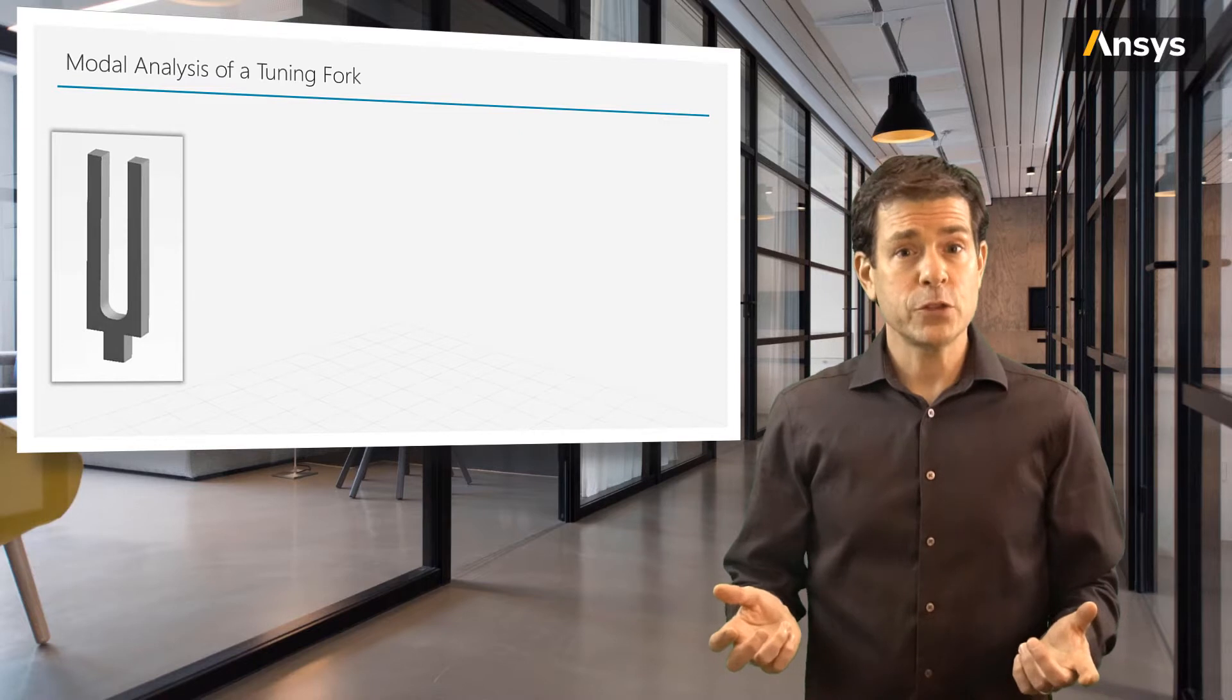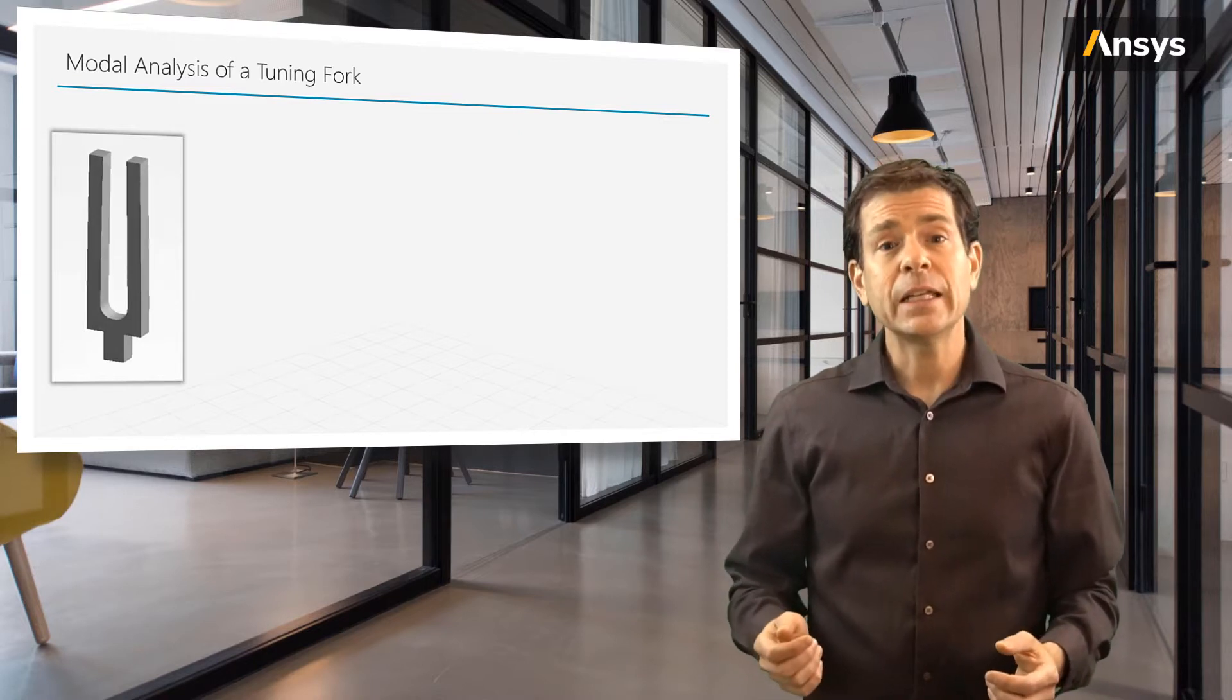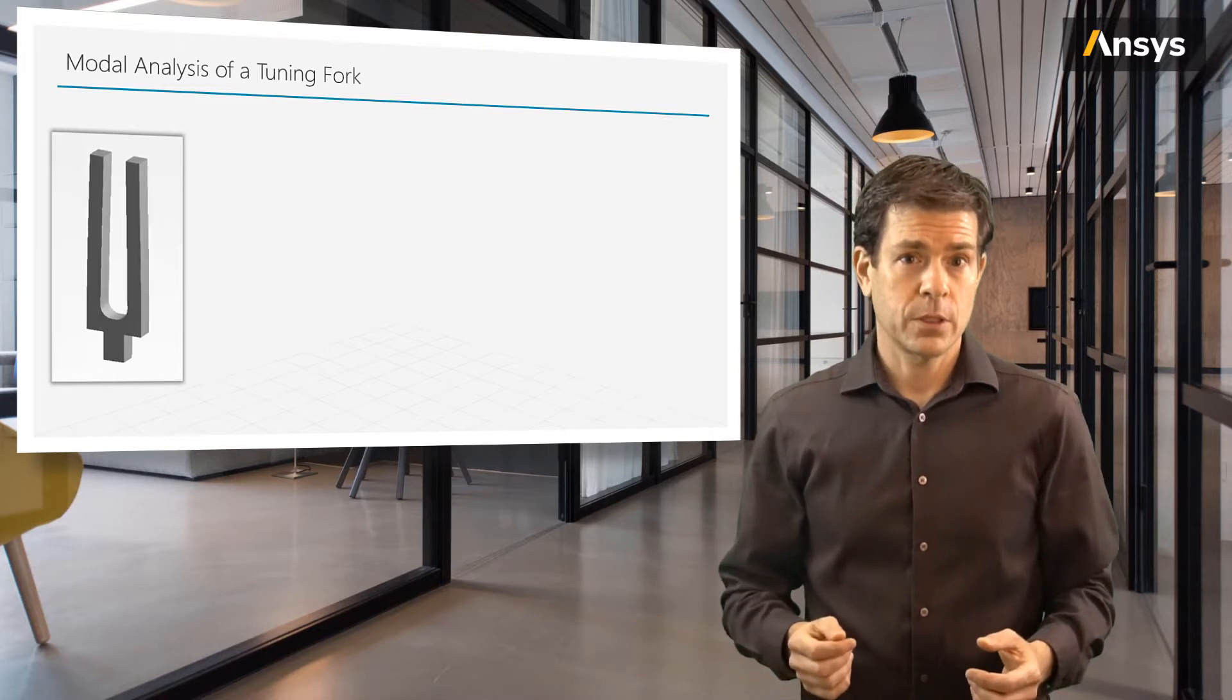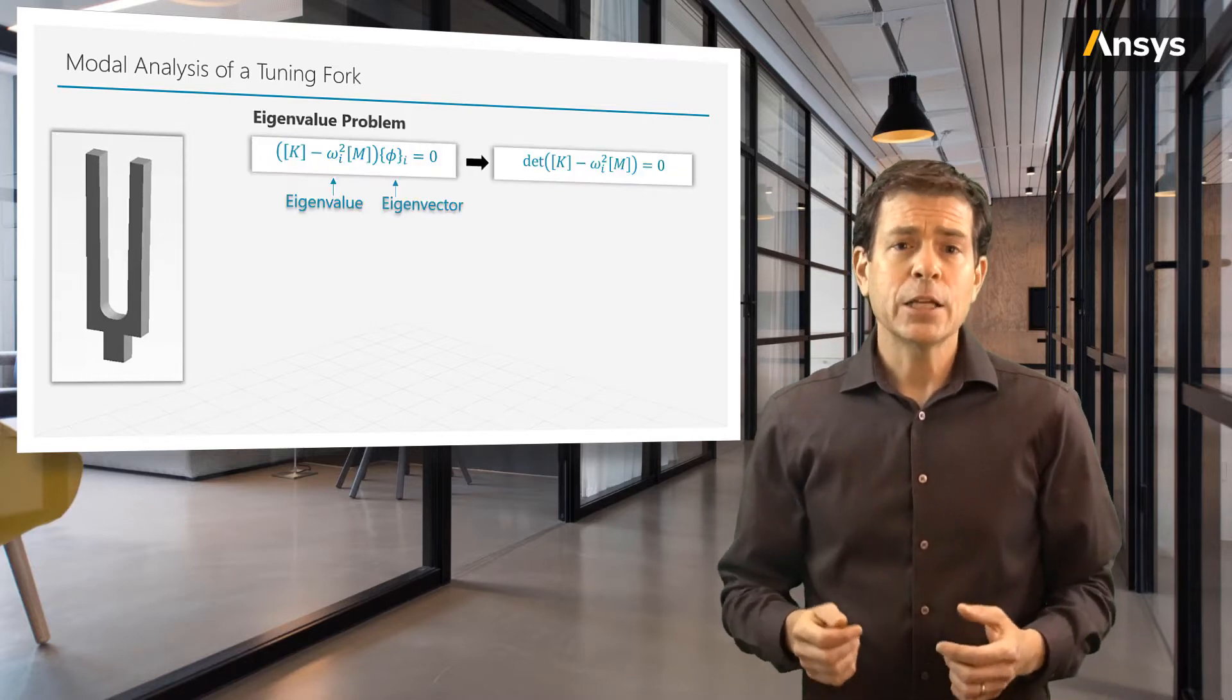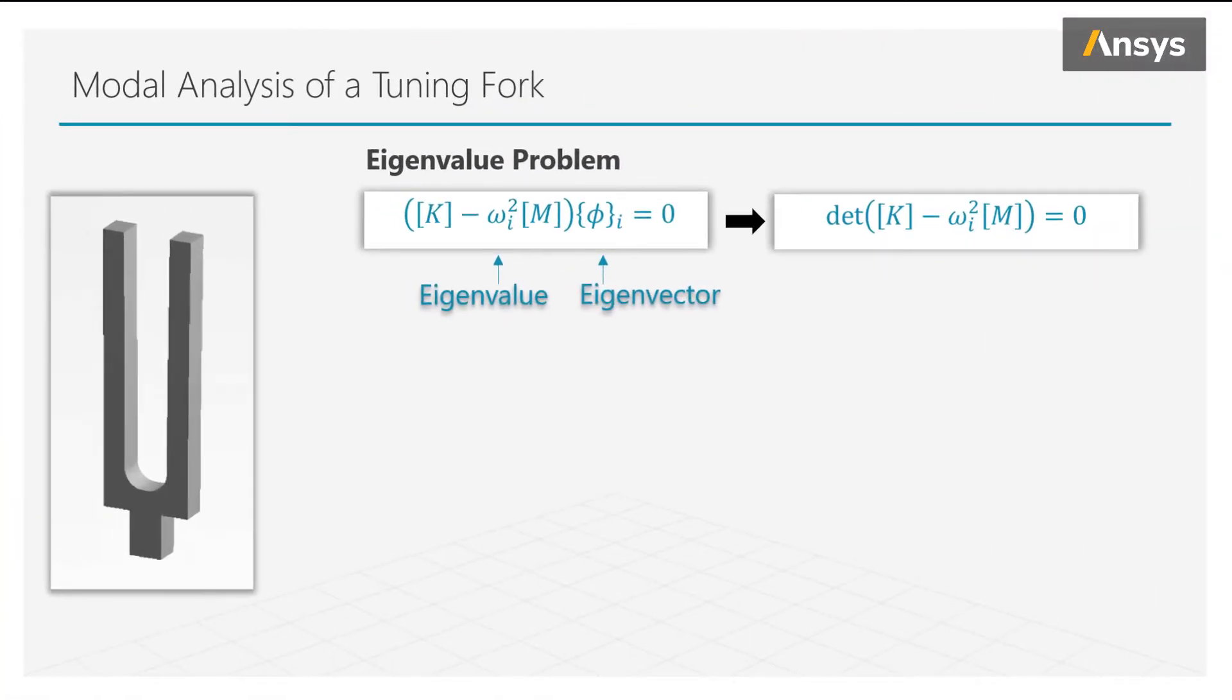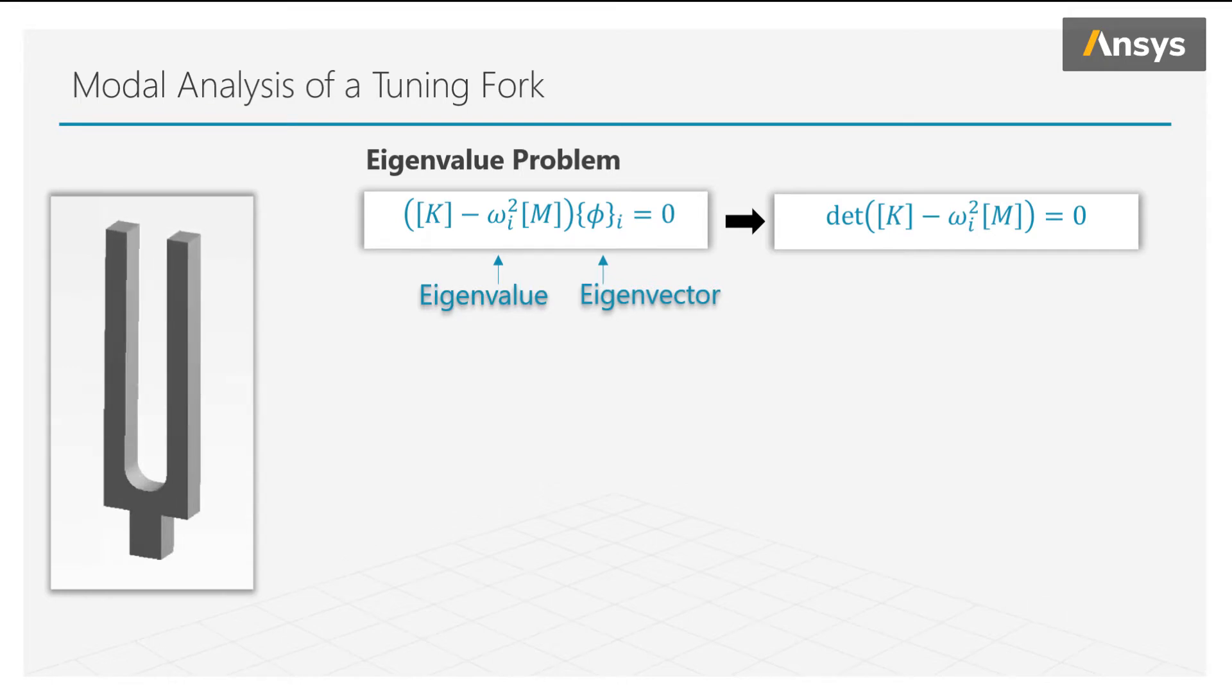We have a simulation model of a tuning fork and it is oscillating at 440 Hertz, but the animation is slowed down so it can easily be seen. Now recall from our preceding lesson, we learned about the eigenvalue problem. The equation is shown here and the solution for a general structure with many degrees of freedom requires an eigensolver.